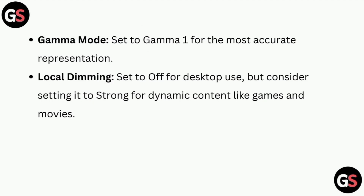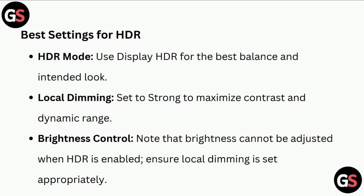Set Gamma Mode to Gamma 1 for the most accurate representation. Set Local Dimming to Off for desktop use, but consider setting it to Strong for dynamic content like games and movies.